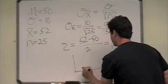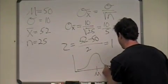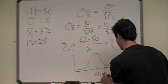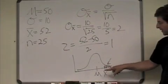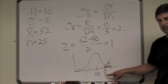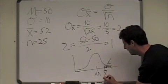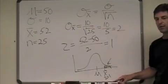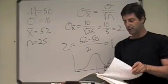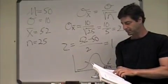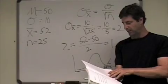If we were to draw a graph, we're looking for this area right here. Here's the population mean. Here's the sample mean. What is this area? The area beyond z, beyond the z value of 1. So we look in Appendix A, find the z value of 1, and we see that the area beyond z is 0.1587.